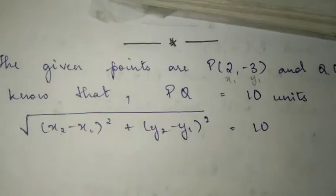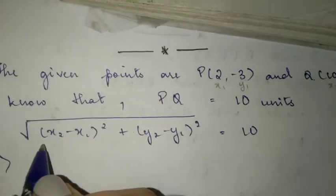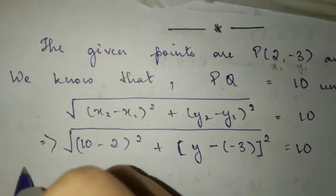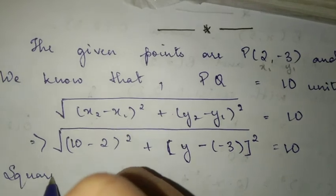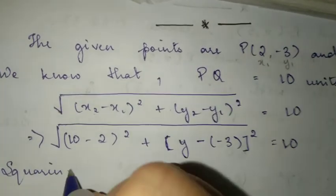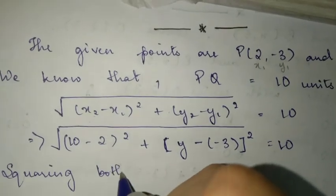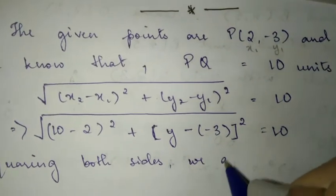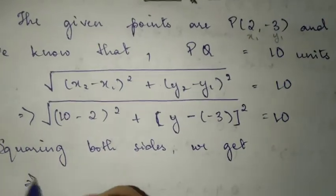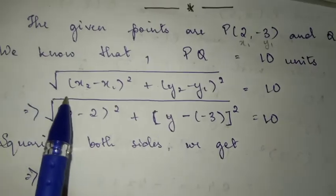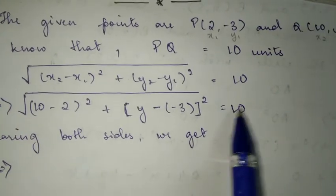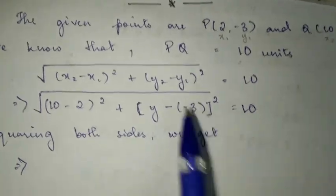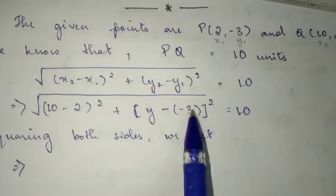Now, substituting the values of X2, X1, Y2, and Y1, we get this. Squaring both sides — LHS and RHS — we substitute the coordinates and simplify the resulting expression with Y2 terms.